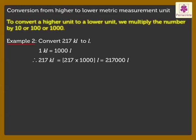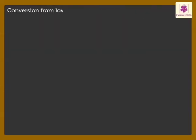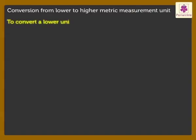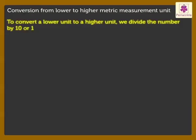Now, let us see the conversion from lower to higher metric measurement unit. To convert a lower unit to a higher unit, we divide the number by 10 or 100 or 1000.